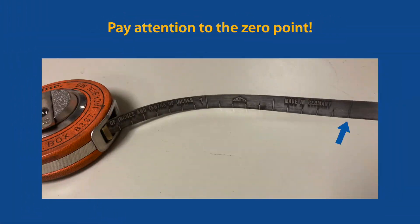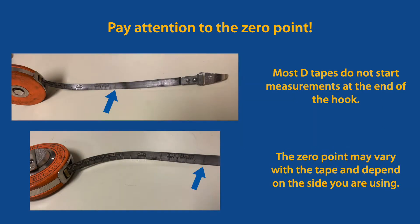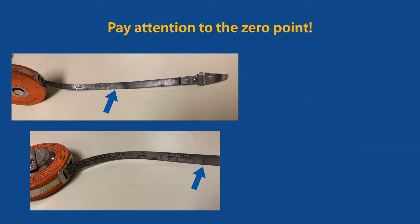Like any measurement tool, when using a d-tape it's important to pay attention to the zero point. On most diameter tapes, there'll be a clearly marked zero. But on some, the zero point may just be the end of the tape, and it may differ on either side.